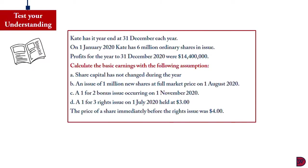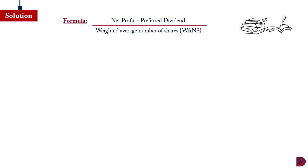Let's test our understanding. Kit has a year end on 31 December each year. On 1 January 2020, Kit has 6 million ordinary shares in issue. Profits for the year to 31 December 2020 were $14.4 million. We have to calculate the basic earnings per share with the following assumptions. First, the share capital has not changed during the year. Secondly, an issue of 1 million new shares at full market price on 1 August 2020. Thirdly, a 1 for 2 bonus issue occurring on 1 November 2020. And lastly, a 1 for 3 right issue, 1 July 2020, held at $3. The price of a share immediately before the right issue was $4.